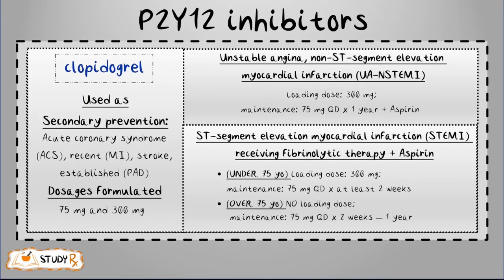Dosage typically consists of 75 mg, with a 300 mg dose also available. These medications are used for secondary prevention — meaning they aim to reduce the impact of a disease or injury that has already occurred, preventing further disease development. Clopidogrel may be used in acute coronary syndrome situations.